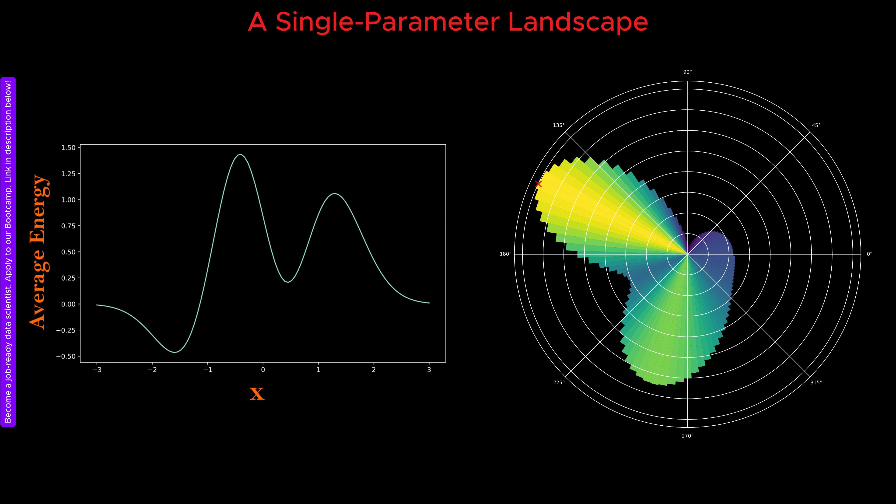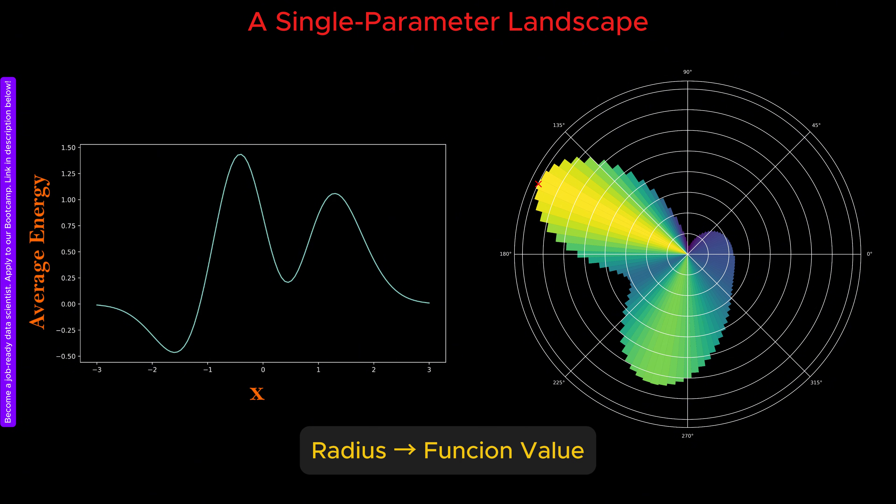However, an important issue immediately becomes apparent. In the microscope representation, the radius is used to represent the value of the function. As a result, the minima of the function are much harder to spot because they sit very close to the center of the circle, where the radius is close to zero.